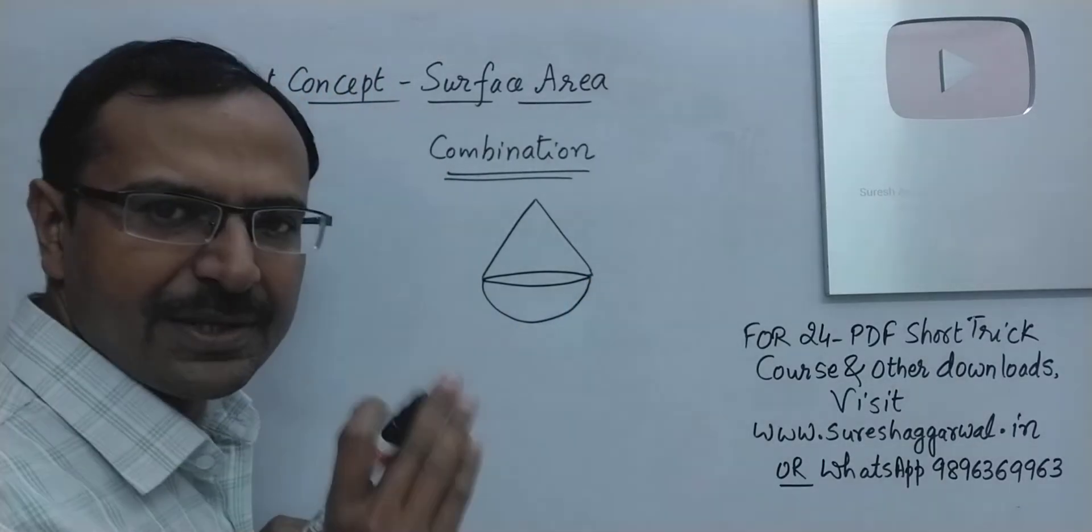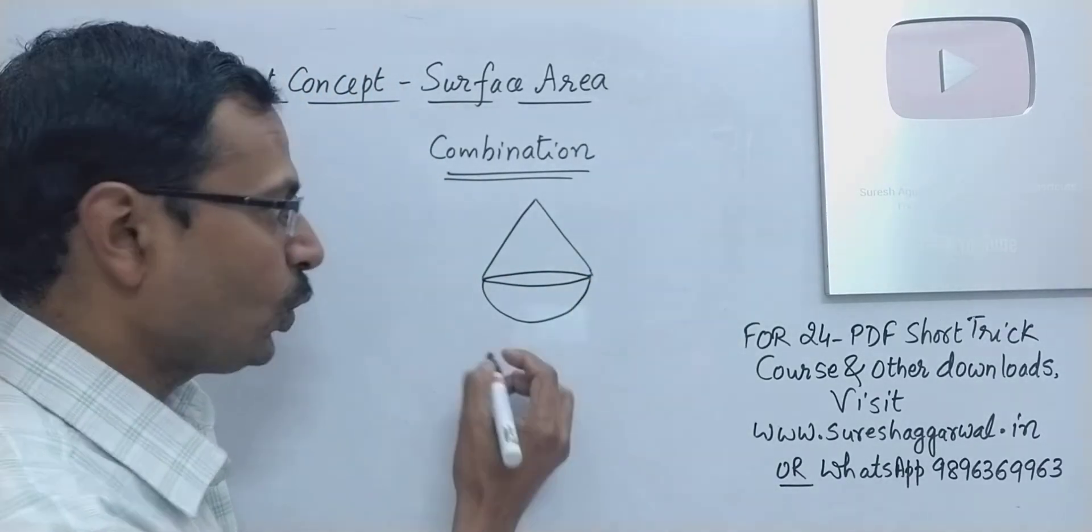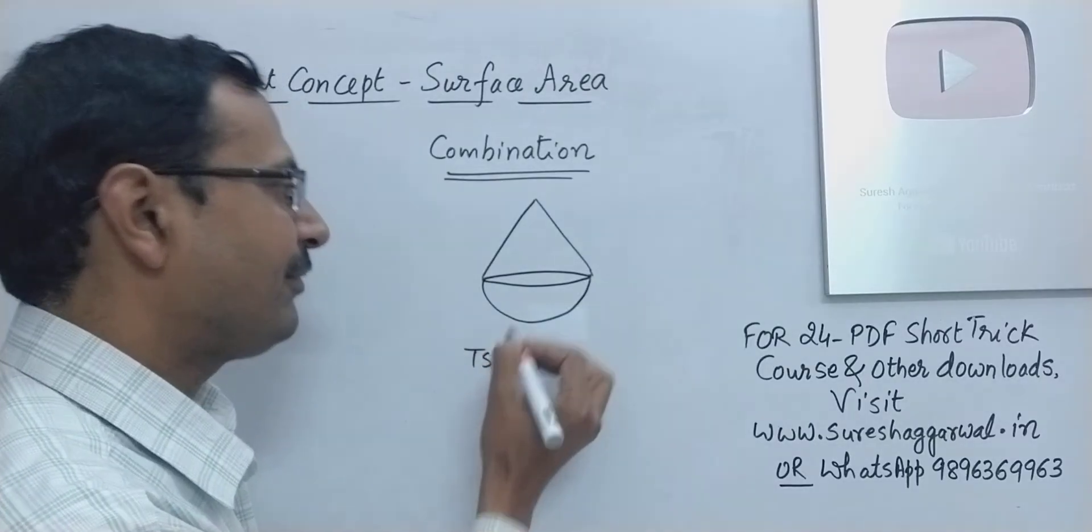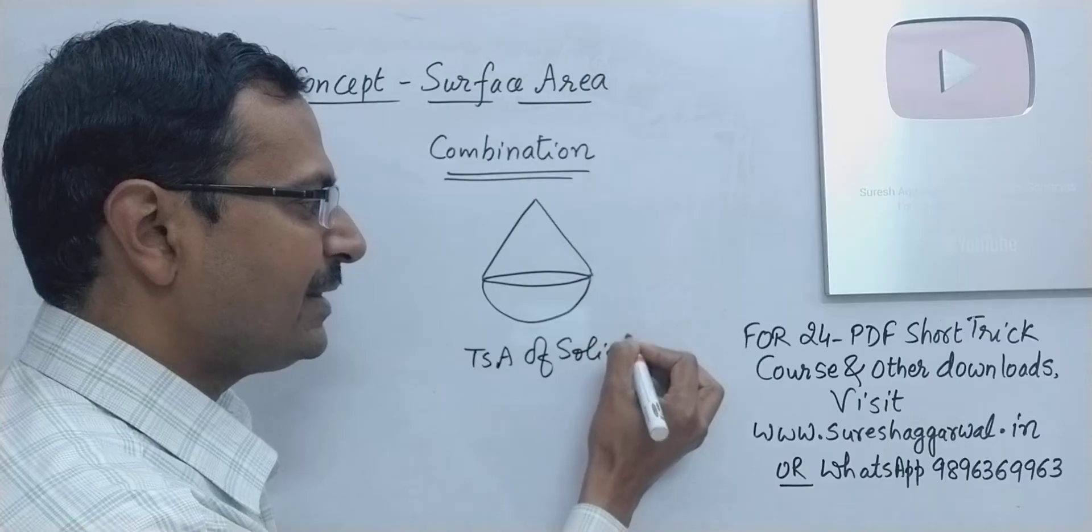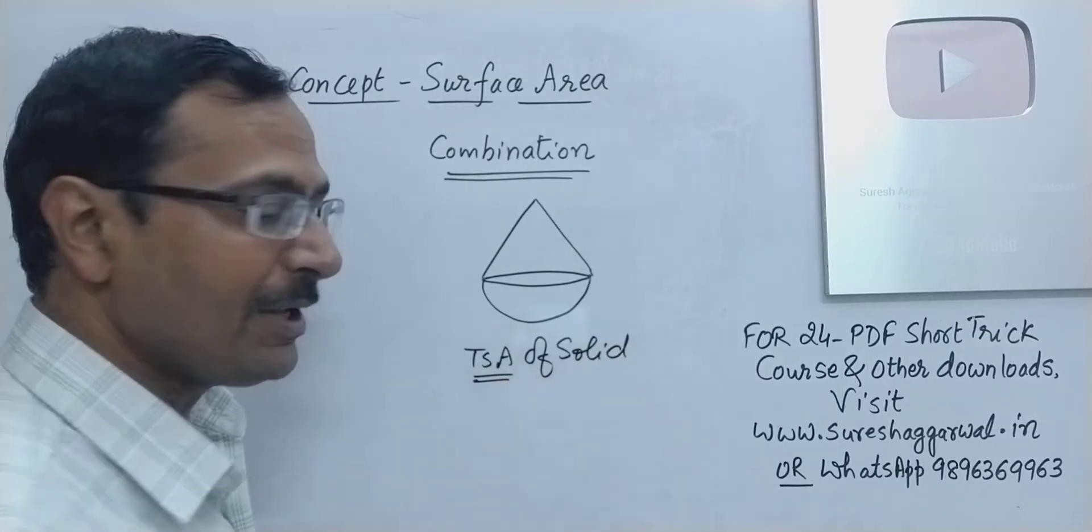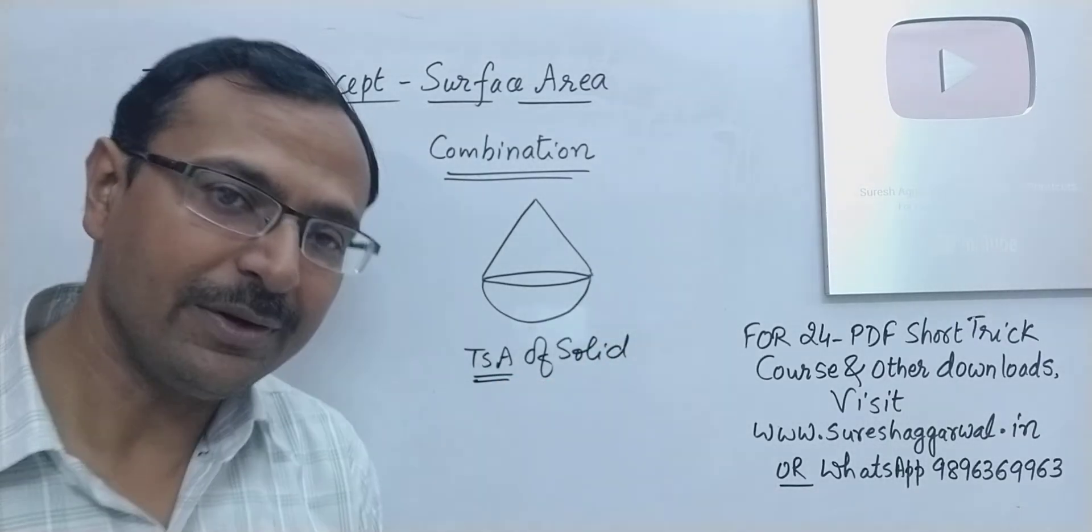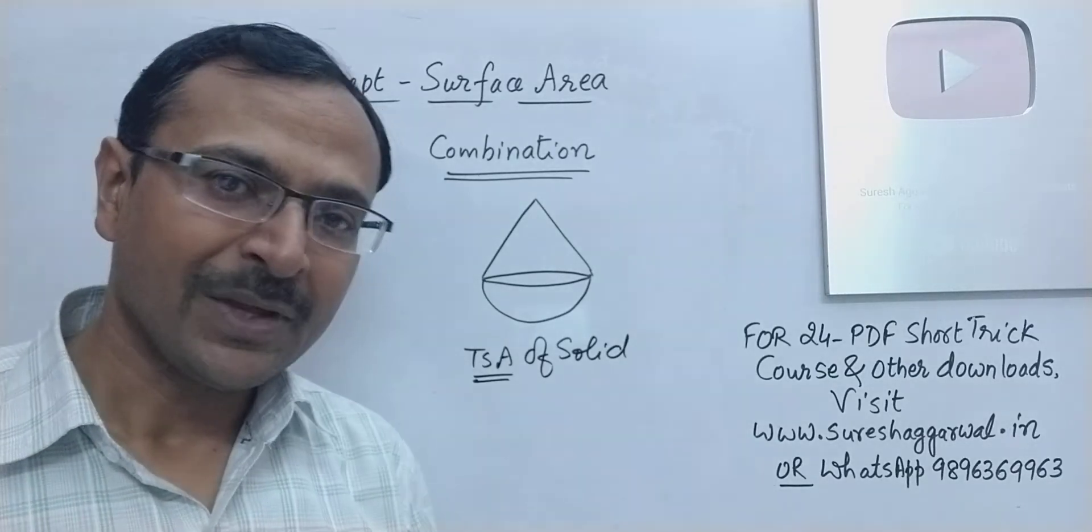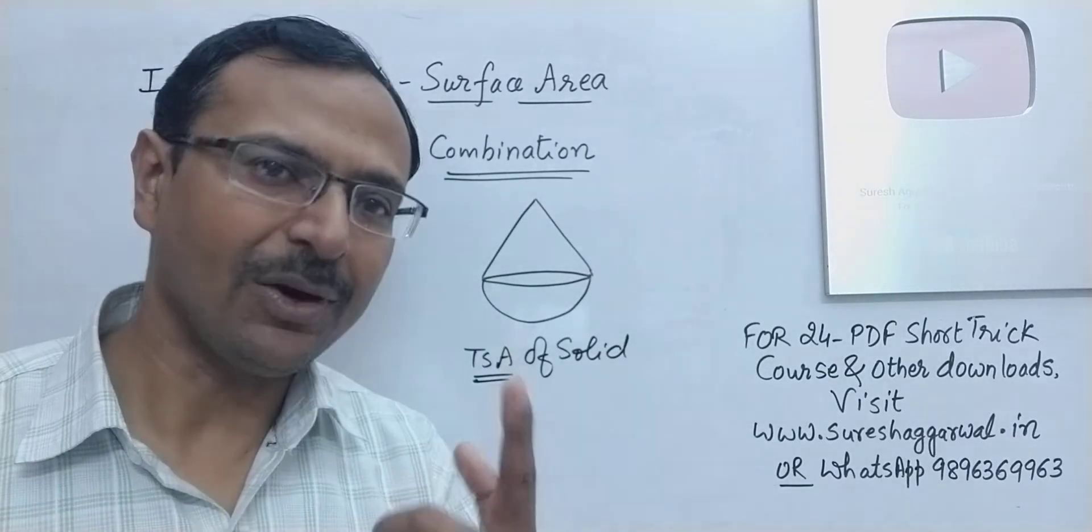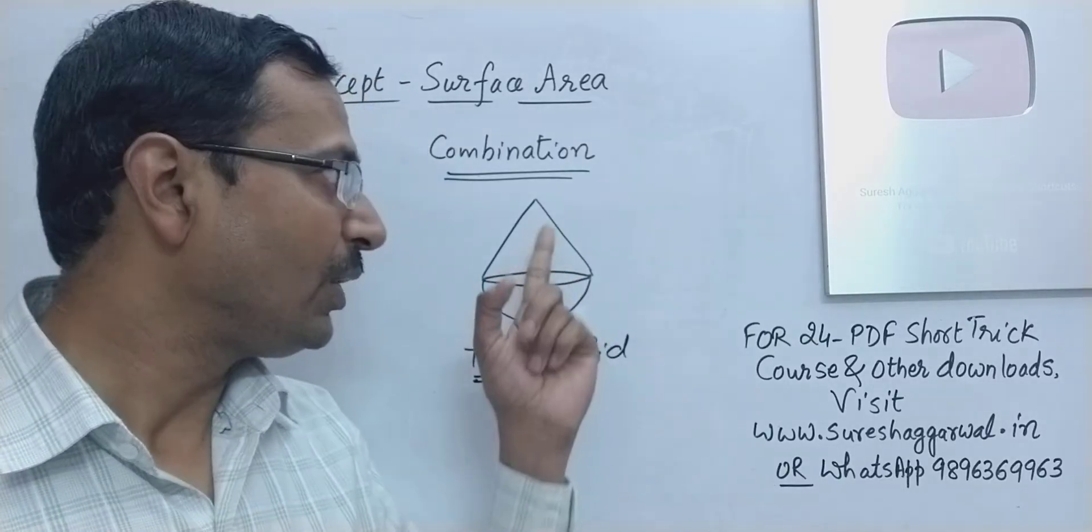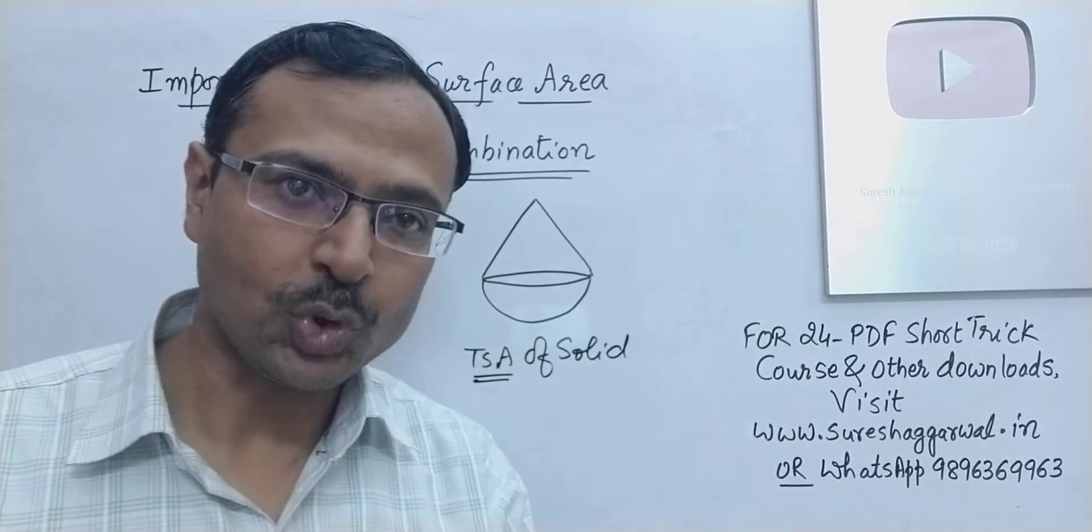If you have to find the total surface area of this solid, TSA of solid, then TSA, normally when the students see this word TSA, total surface area, then they tend to think that we have to use the formulas of total surface area of cone and the hemisphere which are joined together. But that is not the case.